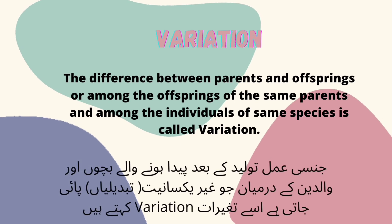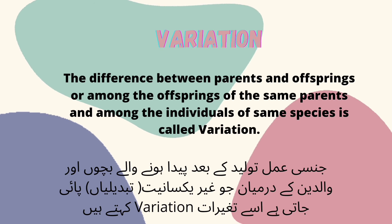Variation — تغیرات۔ جنسی عملِ تولید کے بعد پیدا ہونے والے بچوں اور والدین کے درمیان جو غیر یکسانی تبدیلیاں پائی جاتی ہیں اسے تغیرات variation کہتے ہیں۔ The difference between parents and offspring, or among the offspring of the same parents, and among the individuals of the same species, is called variation.